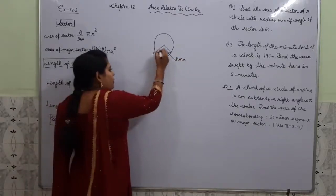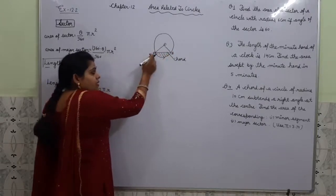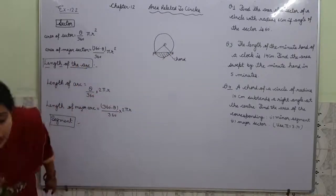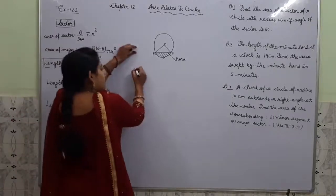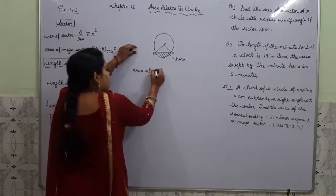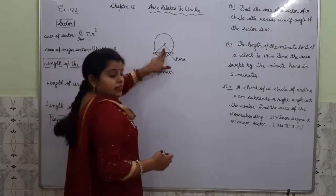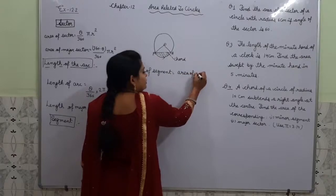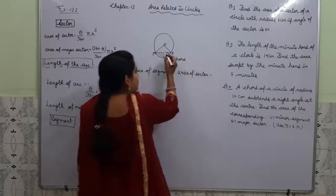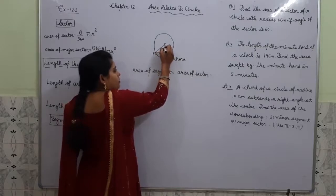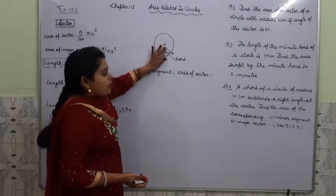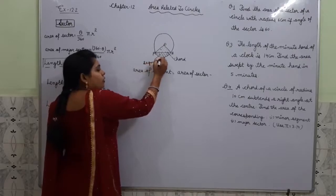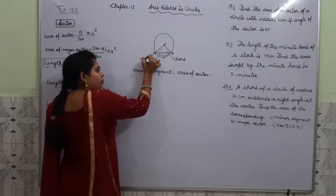If you want to find the area of this segment, area of segment equals area of sector minus area of triangle. A triangle is formed when we join the endpoints of the chord to the centre of the circle. If we subtract the area of that triangle from the area of the sector, we get the area of the segment. This smaller region is our minor segment.